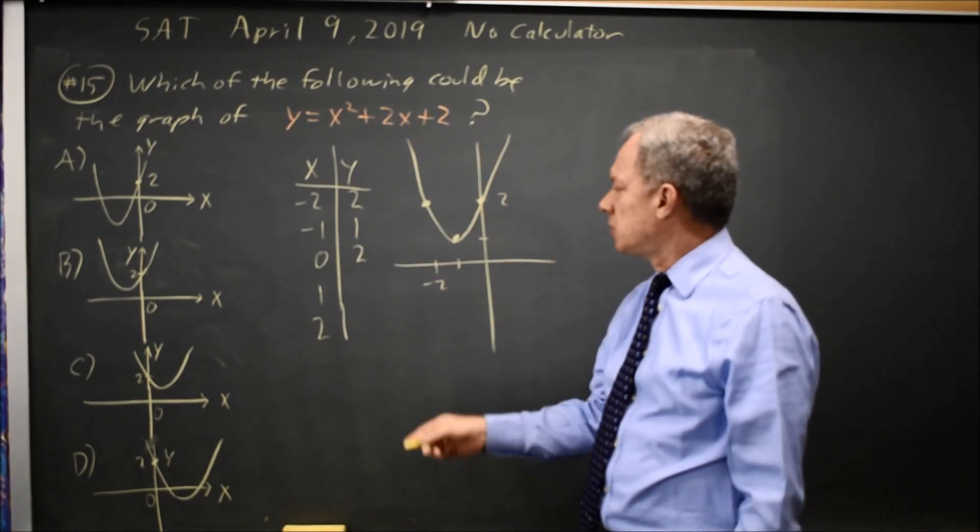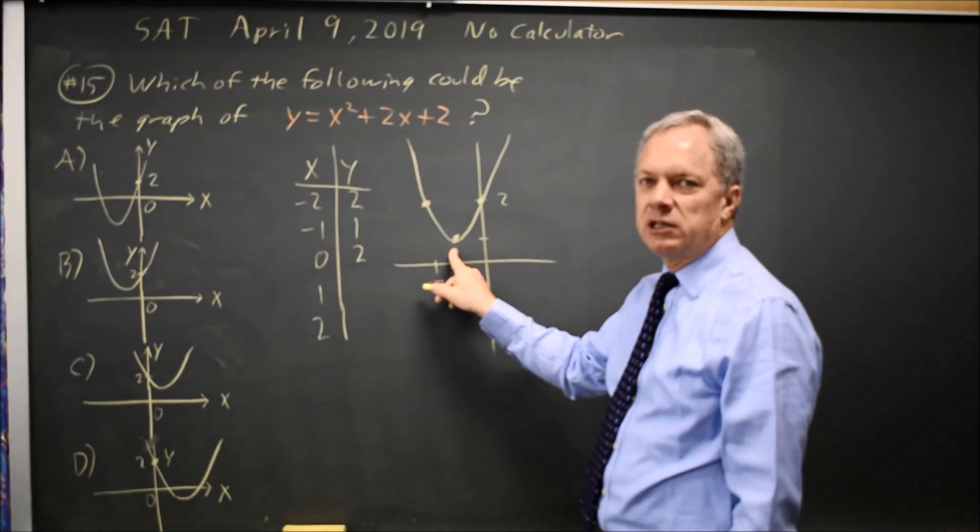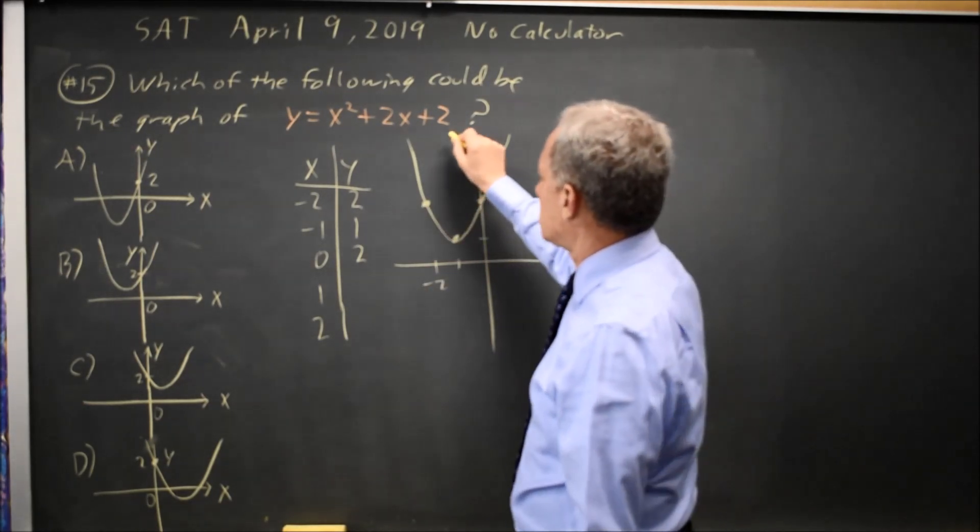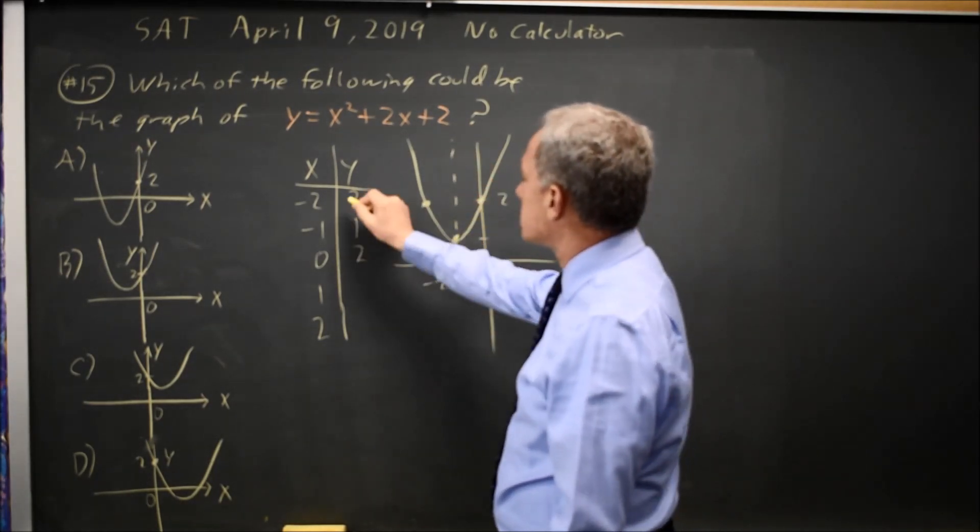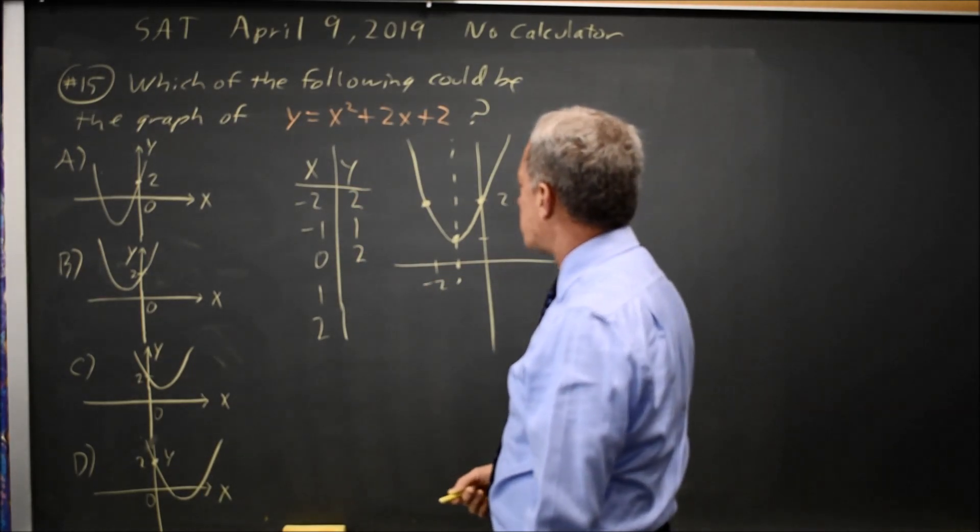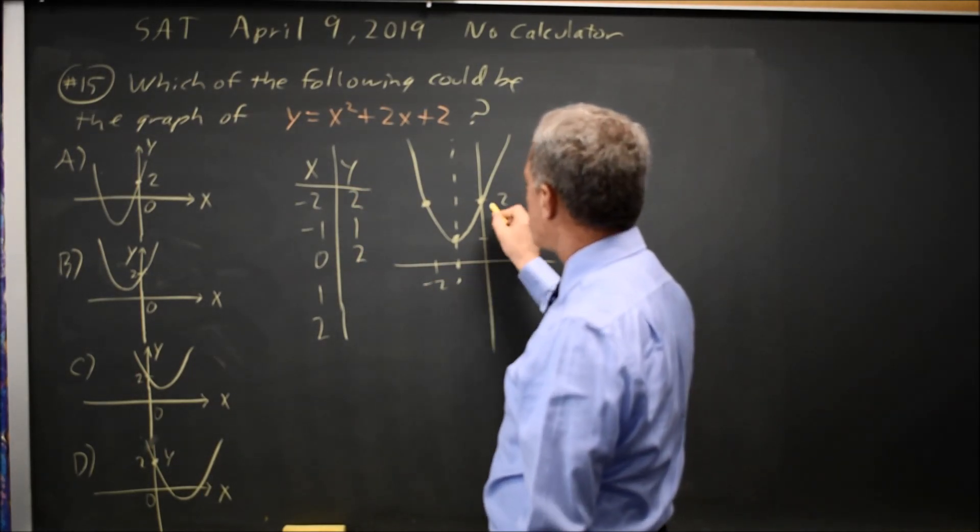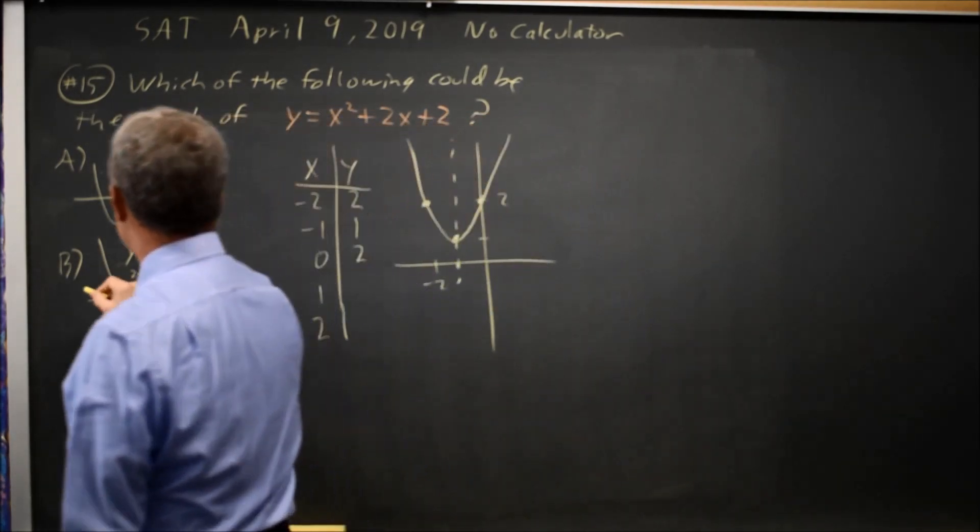By symmetry, I know that X equals negative 1 is the vertex since the values equal distance left and right about it are the same. So my picture looks like choice B.